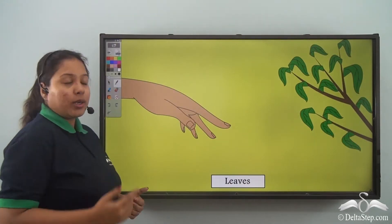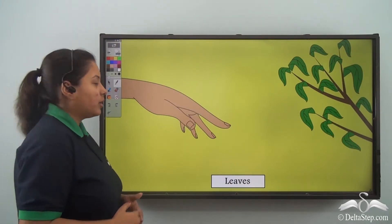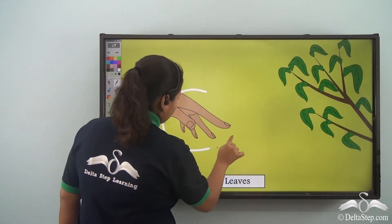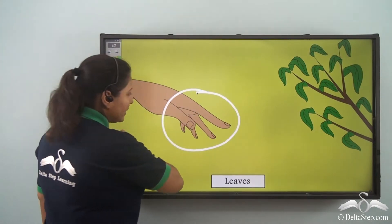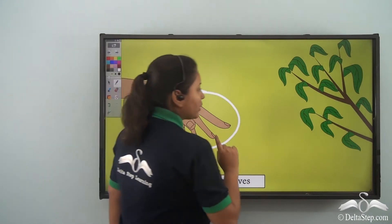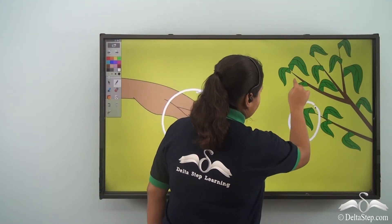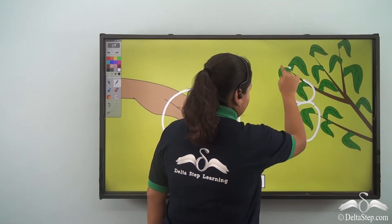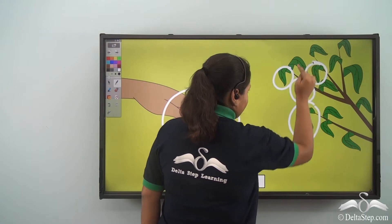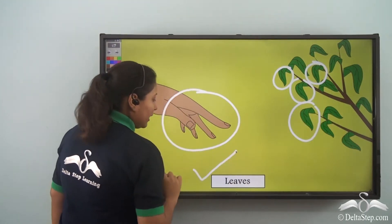Now, on our hand what do we have? We have fingers. Over here you can see the branches of a plant have leaves. These are the leaves.